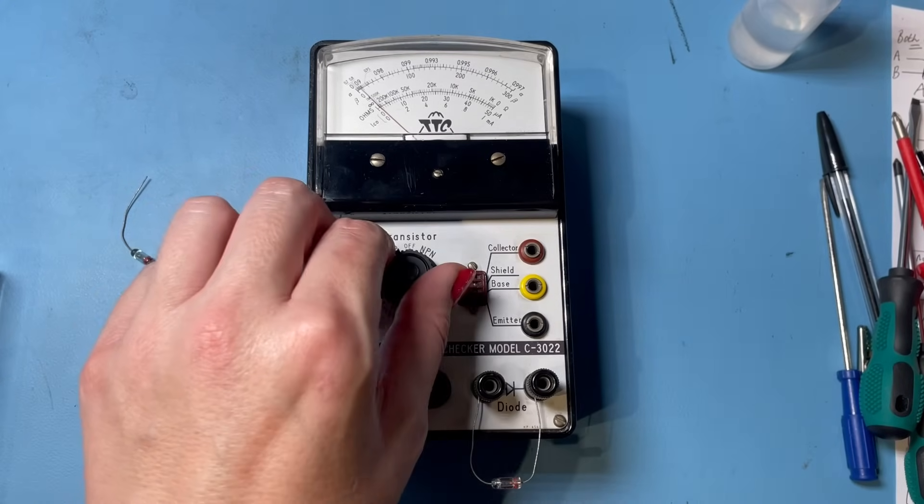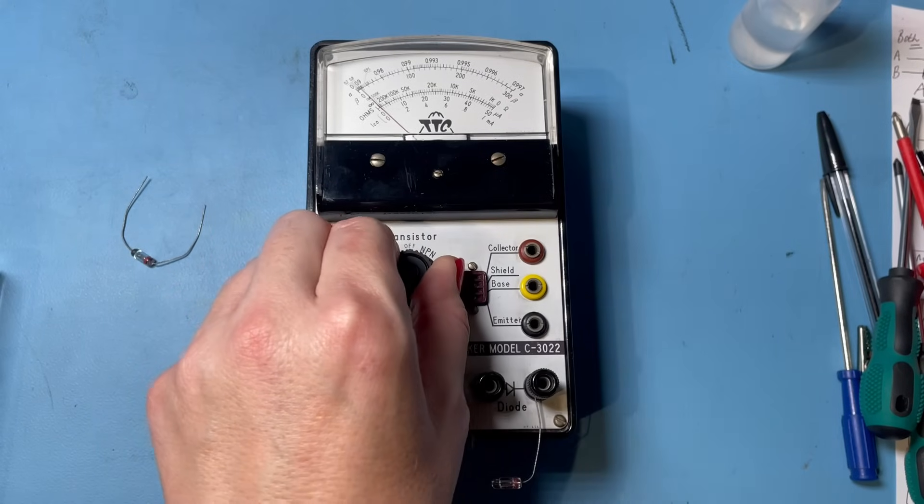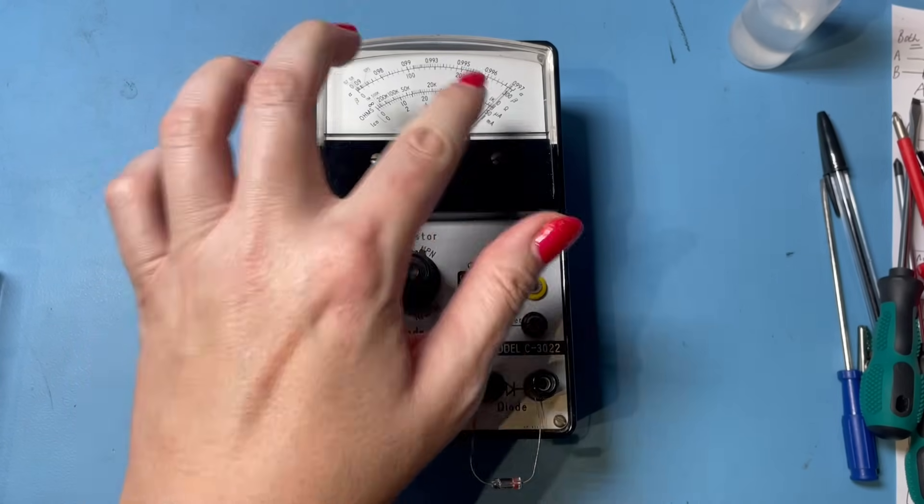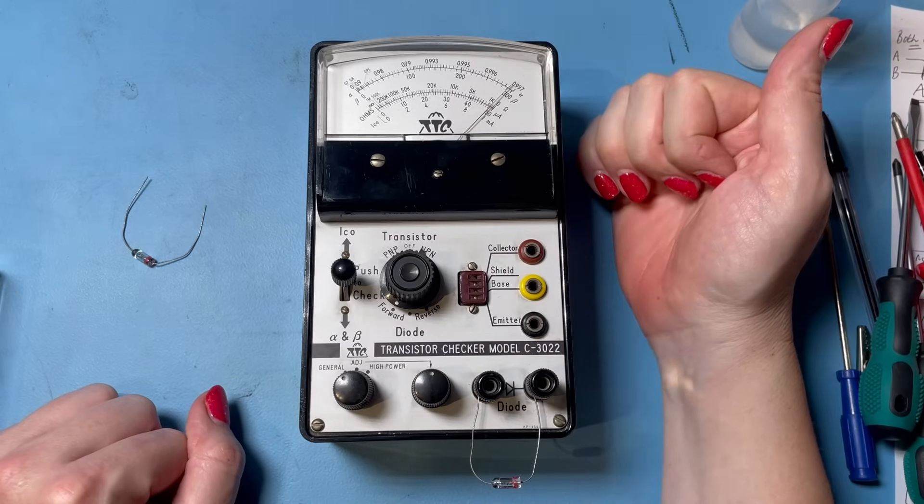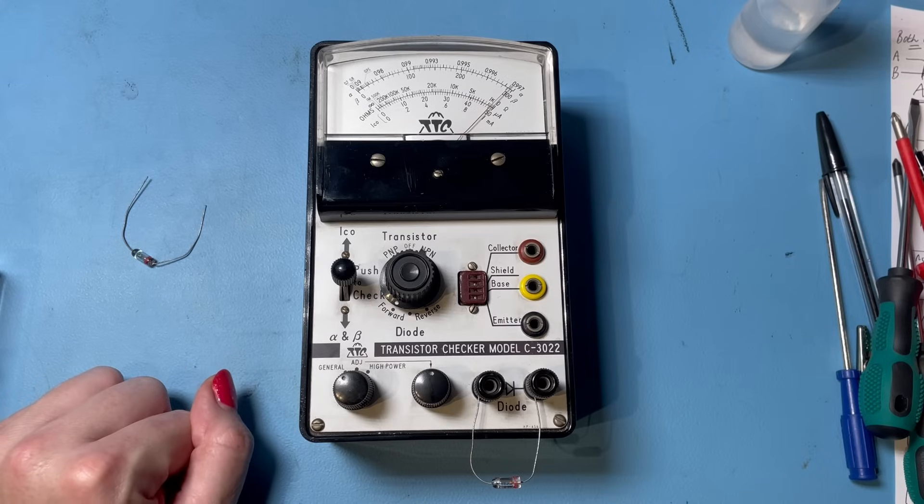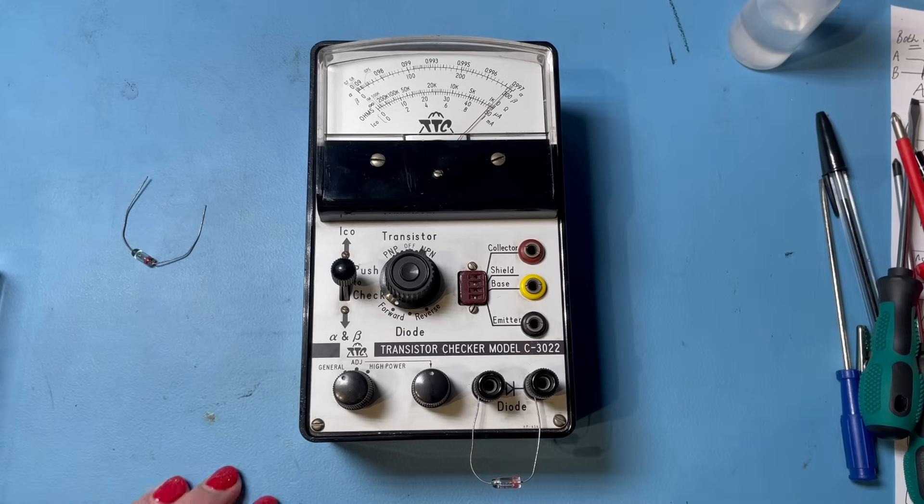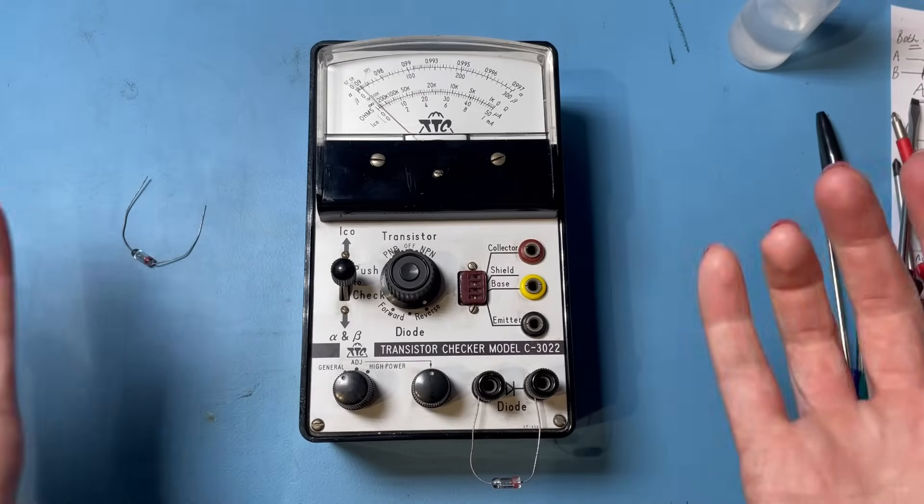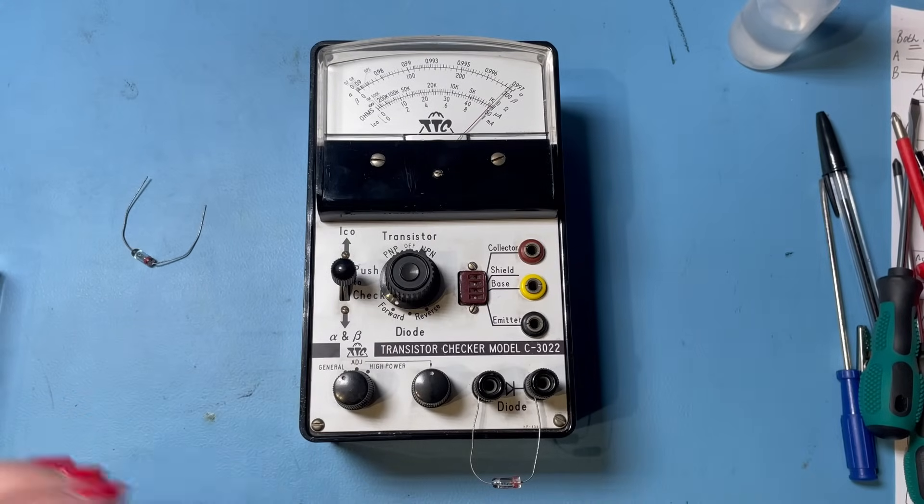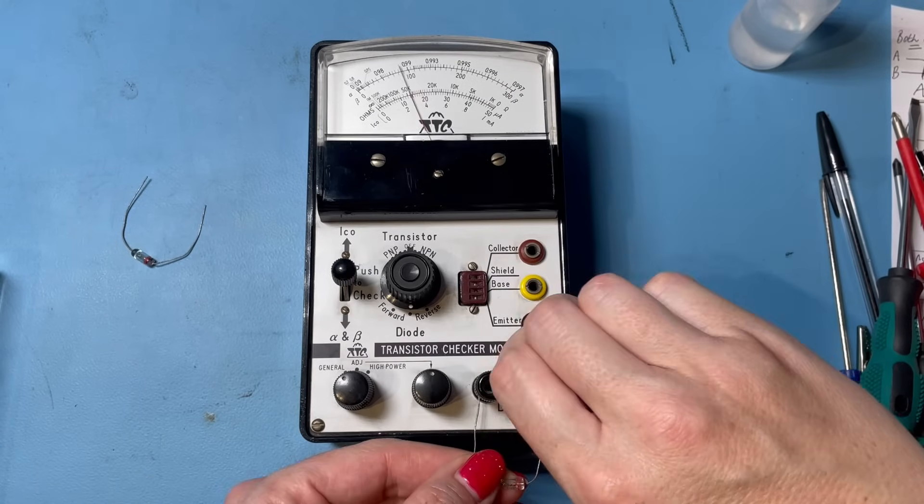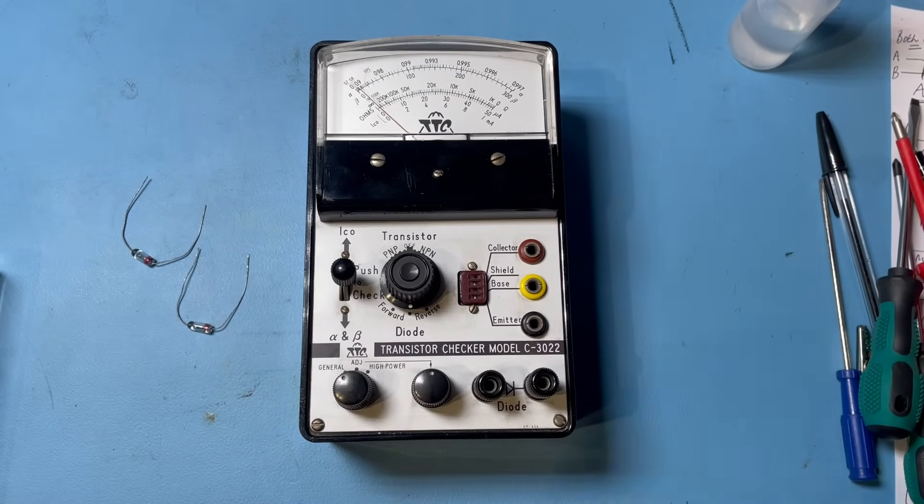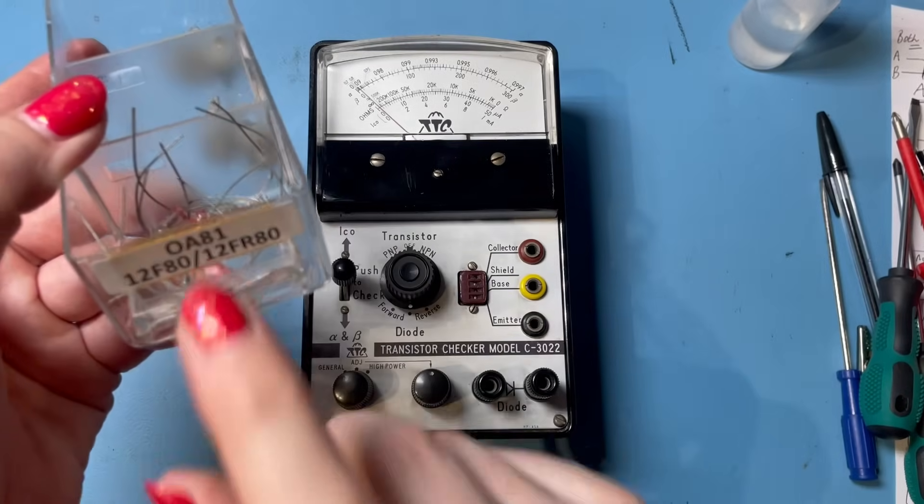All right. And then when we go to forward mode, we should have a very low reading, which we do. It drops down to 200 ohms, something like that. The diode is considered good if the difference between forward and reverse shows a large ratio, which it does. This is a good diode. Fantastic. That's good to know. My new old stock germanium diodes are actually OK. You never know when you're going to need an OA81, do you?